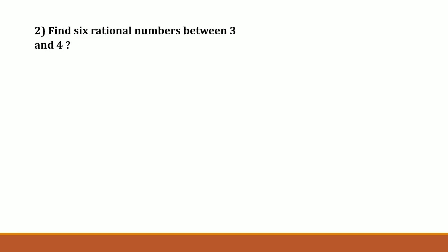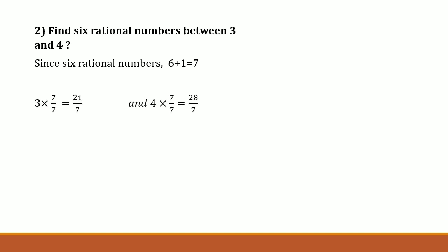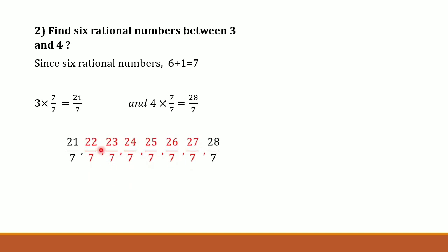The second question reads: find six rational numbers between 3 and 4. Since we have to find six rational numbers, we add 1 to 6 to get 7. The first number 3 is multiplied and divided by 7 to get 21 upon 7, and the second number 4 is also multiplied and divided by 7 to get 28 upon 7. The numbers that lie between 21 upon 7 and 28 upon 7 are 22 upon 7, 23 upon 7, 24 upon 7.